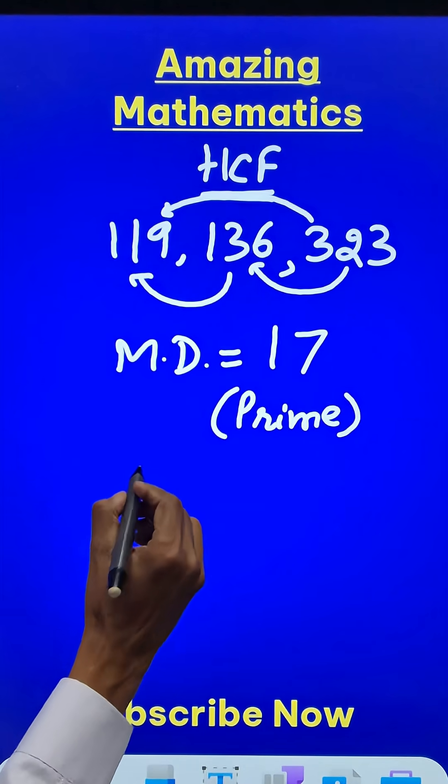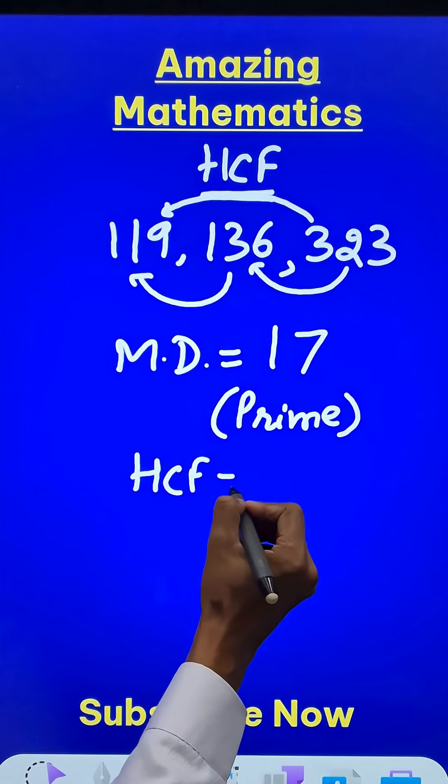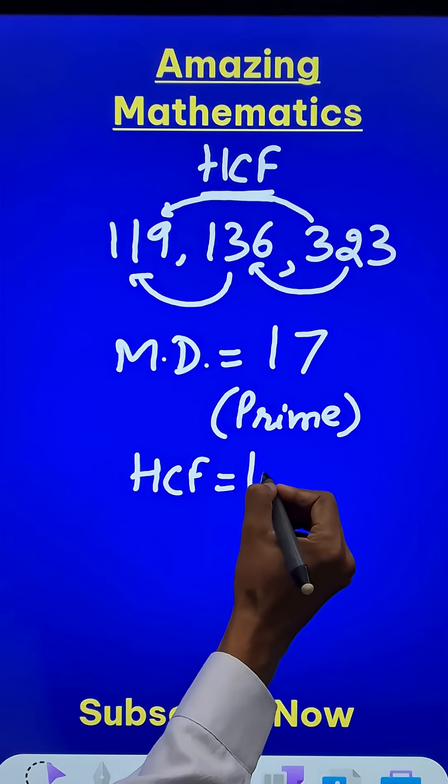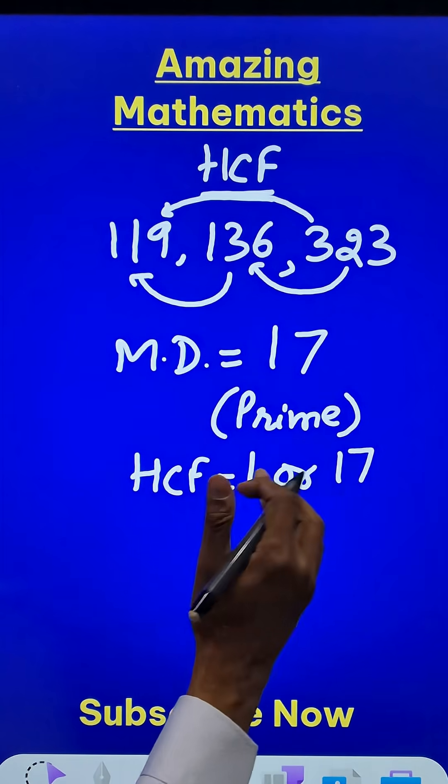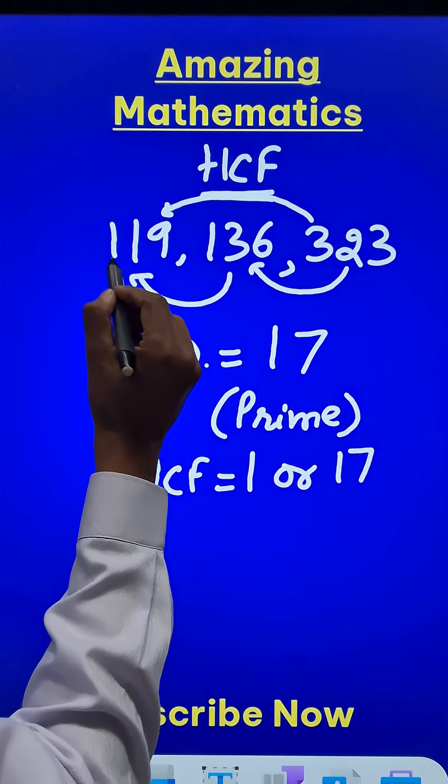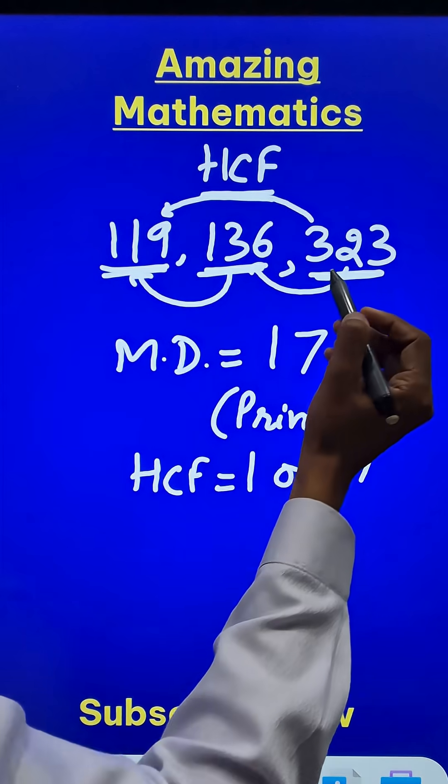So my answer for the question, the HCF of these three numbers, will either be 1 or 17, either of these two answers. Now when will it be 17? When it divides all the three numbers, that is, it becomes a factor of all the three numbers.